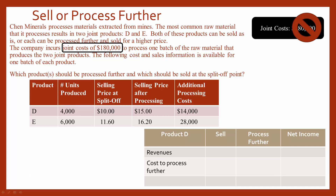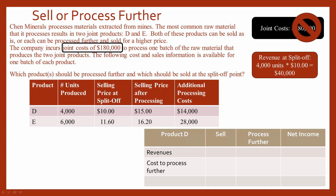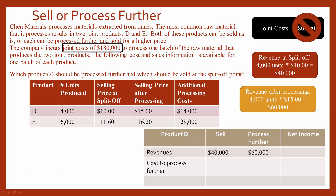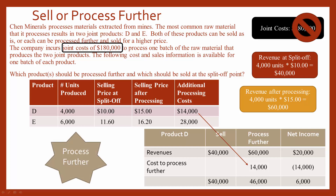Now let's look specifically at product D. If we sell product D as-is, there are 4,000 units at a price of $10 at the split-off point, so the revenue would be $40,000. If they choose to process it further, the selling price becomes $15, meaning they would receive $60,000 — a $20,000 increase in revenue. However, when we factor in the cost to process further, which is $14,000, that causes net income to decrease by $14,000. Overall, if they choose to process further, net income would increase by $6,000, which means they should choose to process product D further.